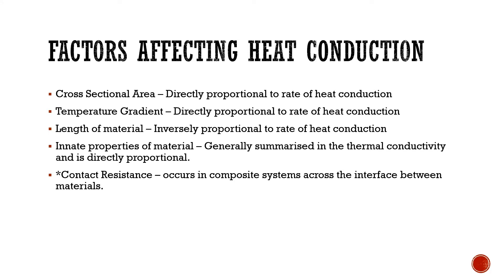Next, we have contact resistance. Now there is an asterisk here because contact resistance does not necessarily always occur during heat conduction. However, in a composite system where there are more than one material and heat is being conducted across them, at the interface between these materials there is a level of contact resistance. Now this can be caused for many reasons, but generally because a material surface is not perfectly smooth — hence there will be little air gaps and spaces that will increase the resistance at those points.